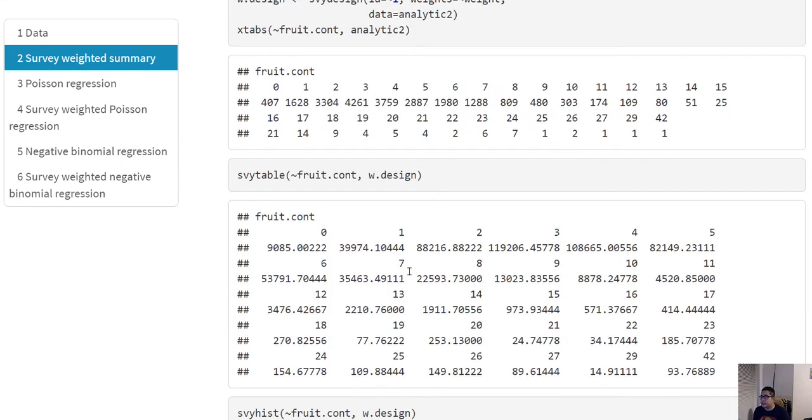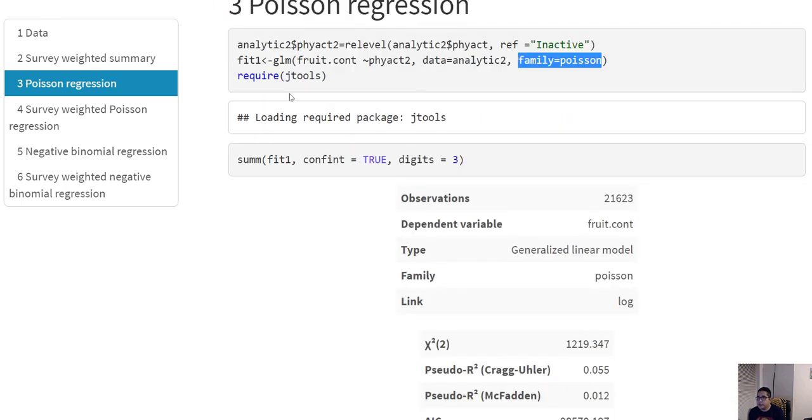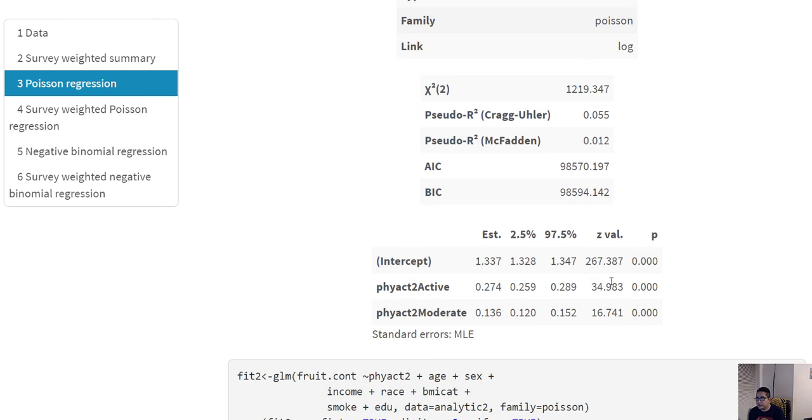For the purposes of running the Poisson regression, we still use the glm function. Remember in the lecture I was talking about Poisson being within the umbrella of glm. The only difference is that in the family we have to mention it is Poisson, and we have to use the log link, but when you select the Poisson that is the default. We can use the sum function from the jtools to extract the coefficients for this.